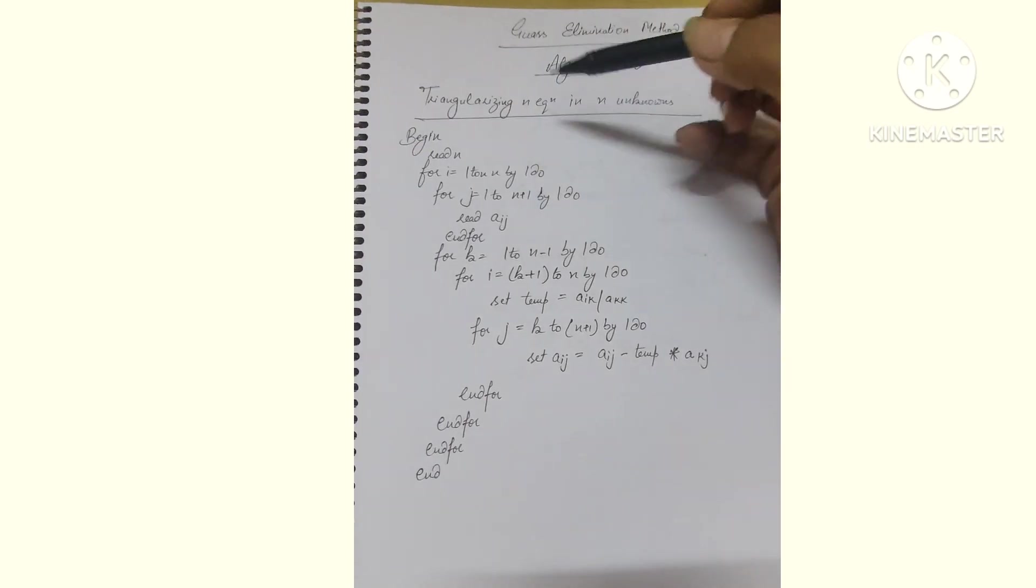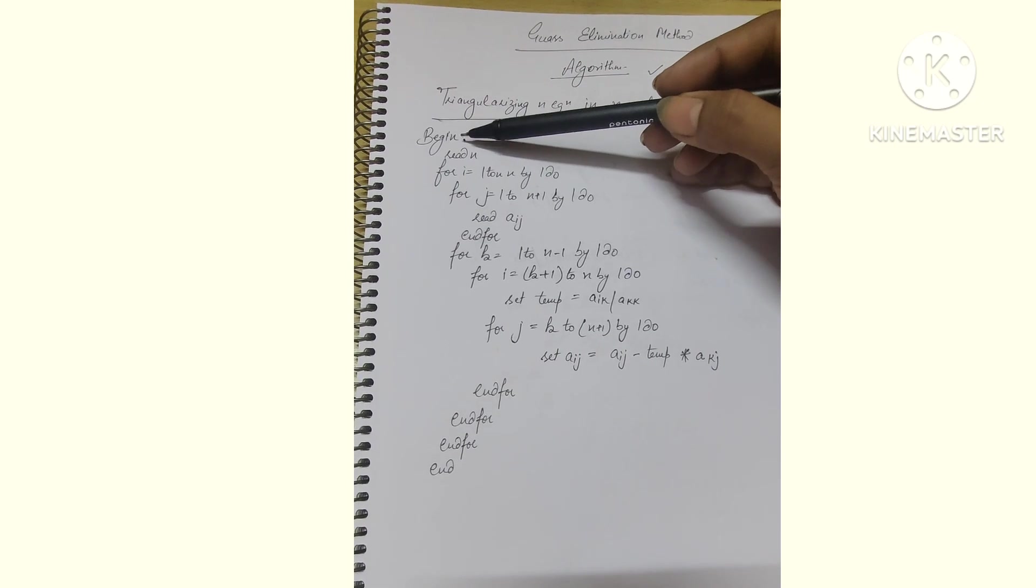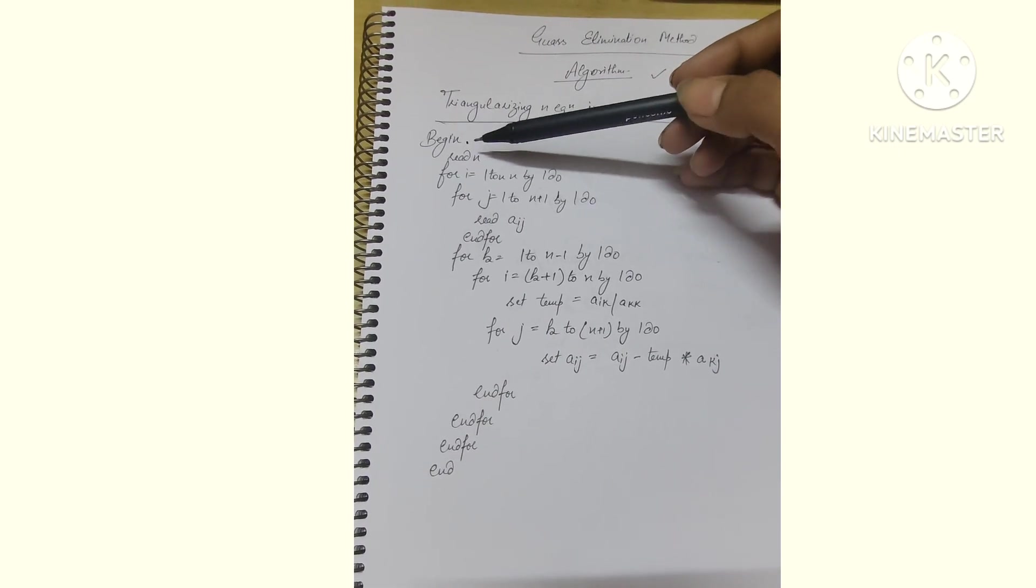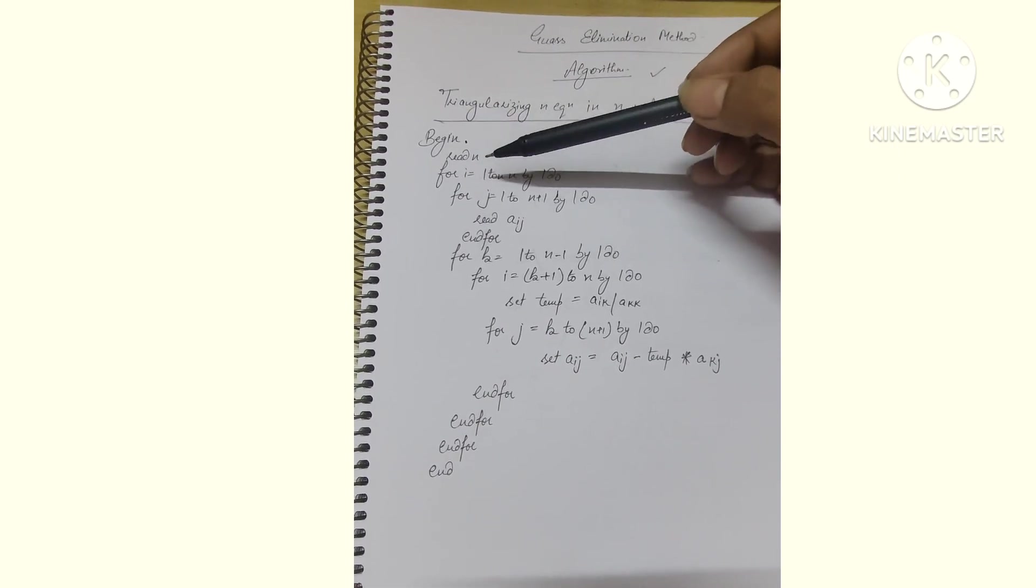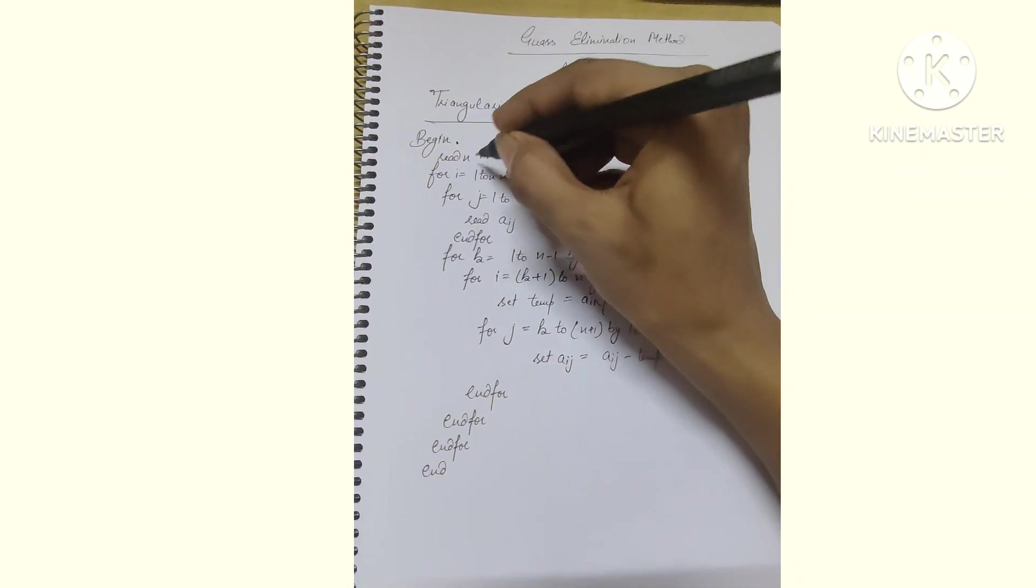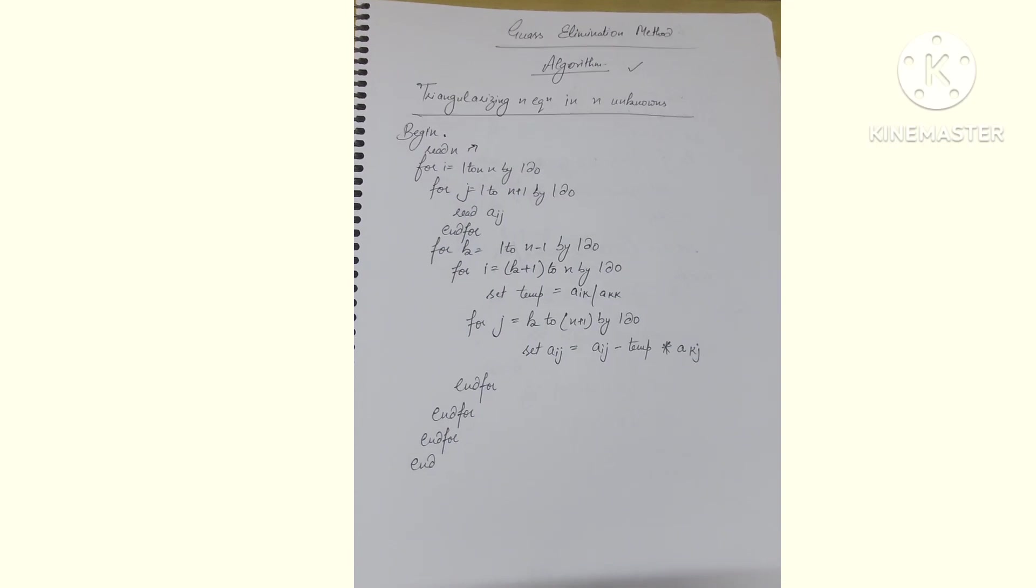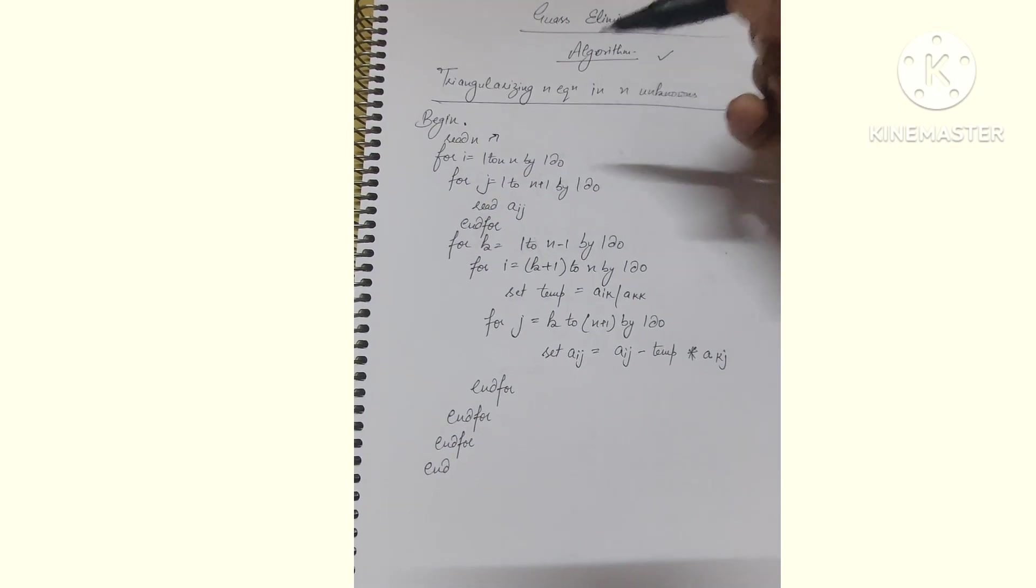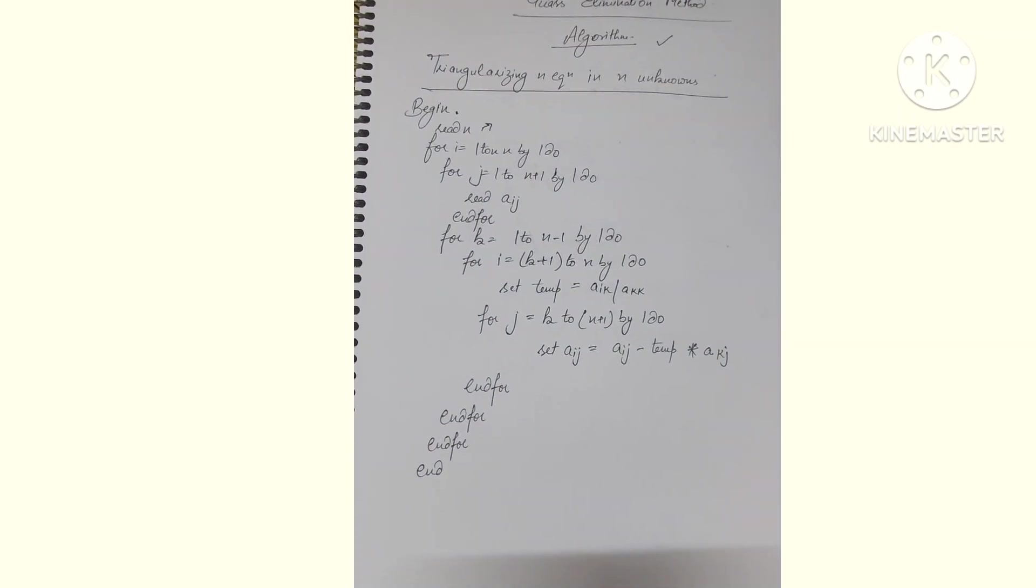The first part: when you enter into any algorithm, start with the begin step. Read the values - total values need to be read. When converting to computer science in any language, first you must declare variables.